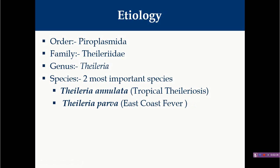Apart from these two species, there are many other species of Theileria responsible for disease in other animals — horses, sheep, and goats. Theileria equi is responsible for disease in horses; it was previously known as Babesia equi but has since been renamed. In sheep and goat, Theileria lestoquardi is a very severe pathogenic organism seen in Asia, the Middle East, and some parts of Africa and Europe. We will mainly focus on Theileria annulata.